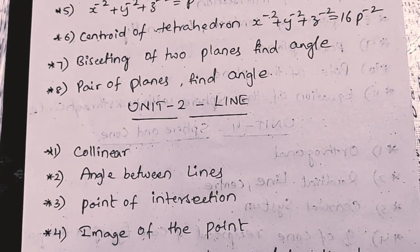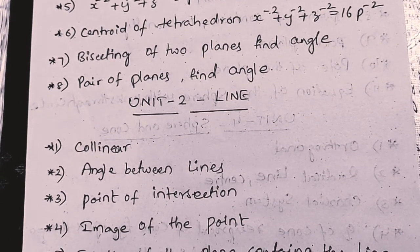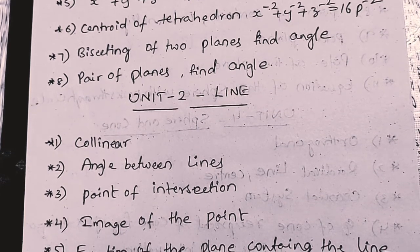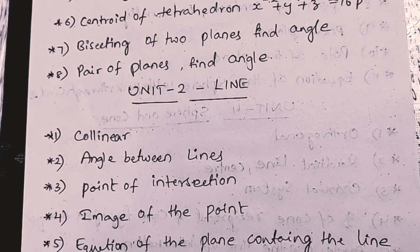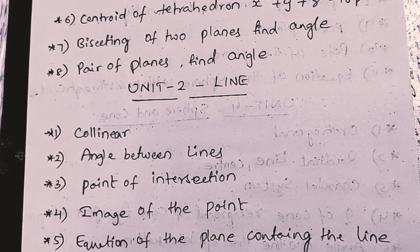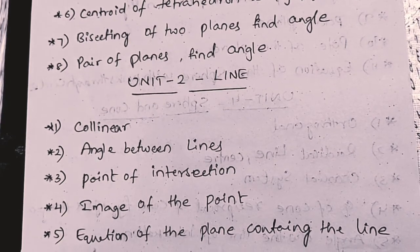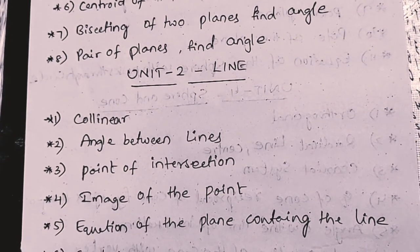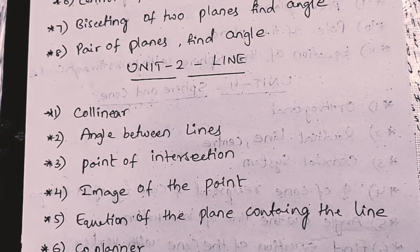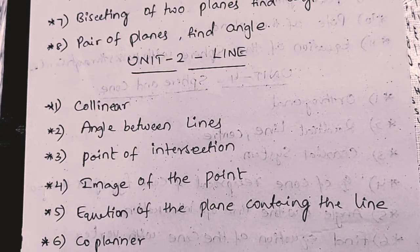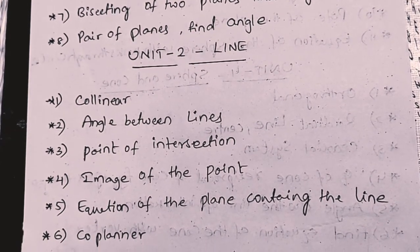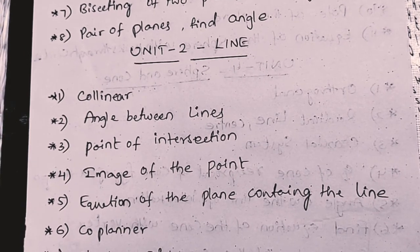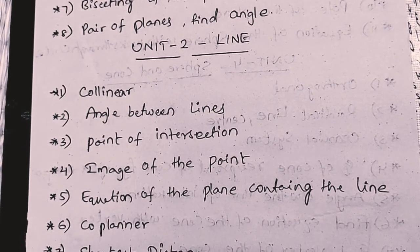Next, if you have a question, image of the point, we choose 10 marks. Question number 3, 5 marks. Equation of the plane containing the line. And next one, coplanar. Coplanar, 10 marks, 10 marks chance. Friends, here. Next, final one. Very, very important one. Shortest distance.